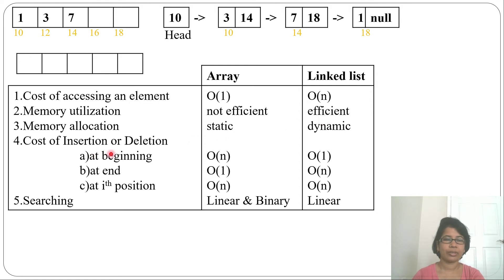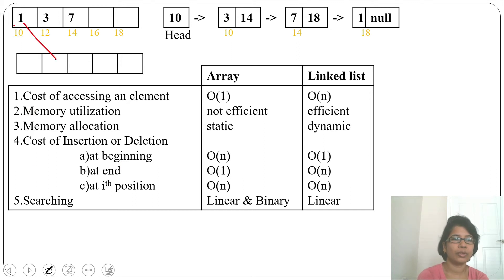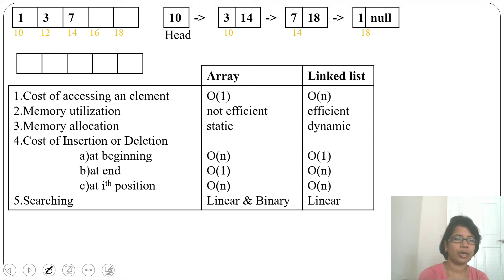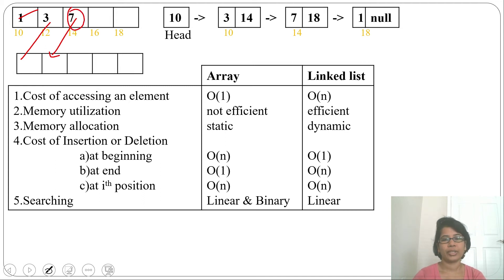Cost of insertion and deletion in arrays: at the beginning it is O(n) because you must shift all data. At the end it is O(1) since no shifting is needed. At the ith position it is O(n) because you shift elements from i to n-1. For deletion: at the beginning O(n), at the end O(1), at ith position O(n) because you must shift elements from i+1 to n-1.